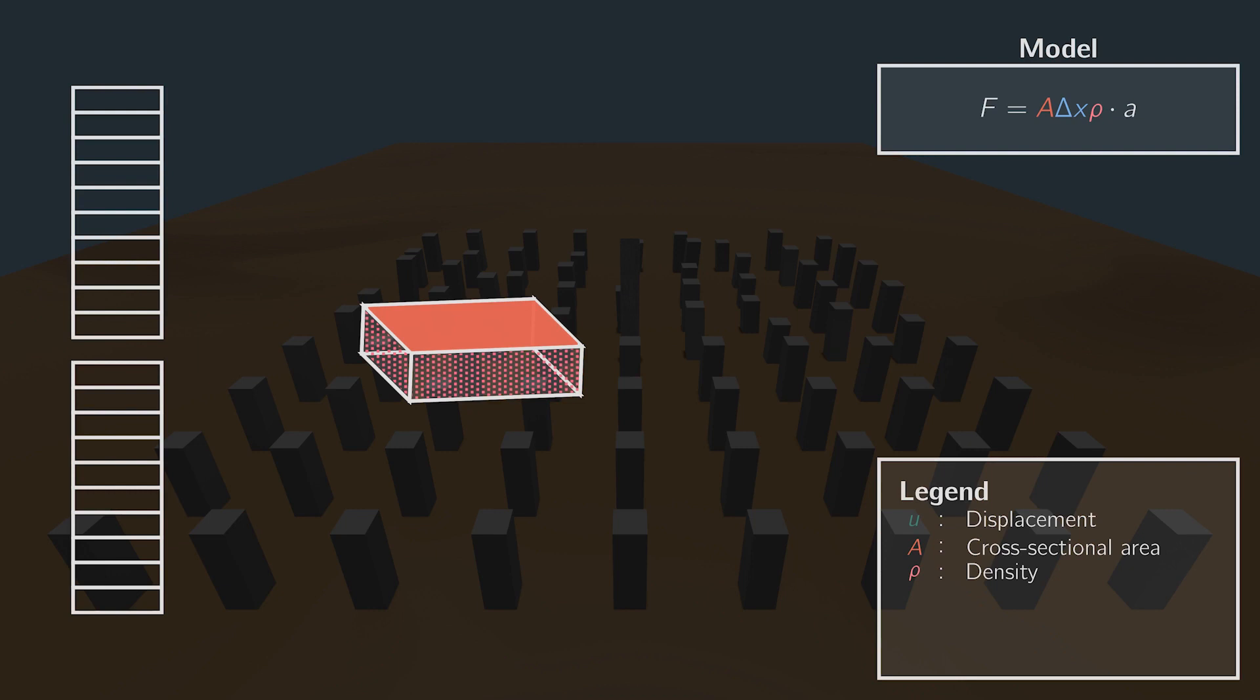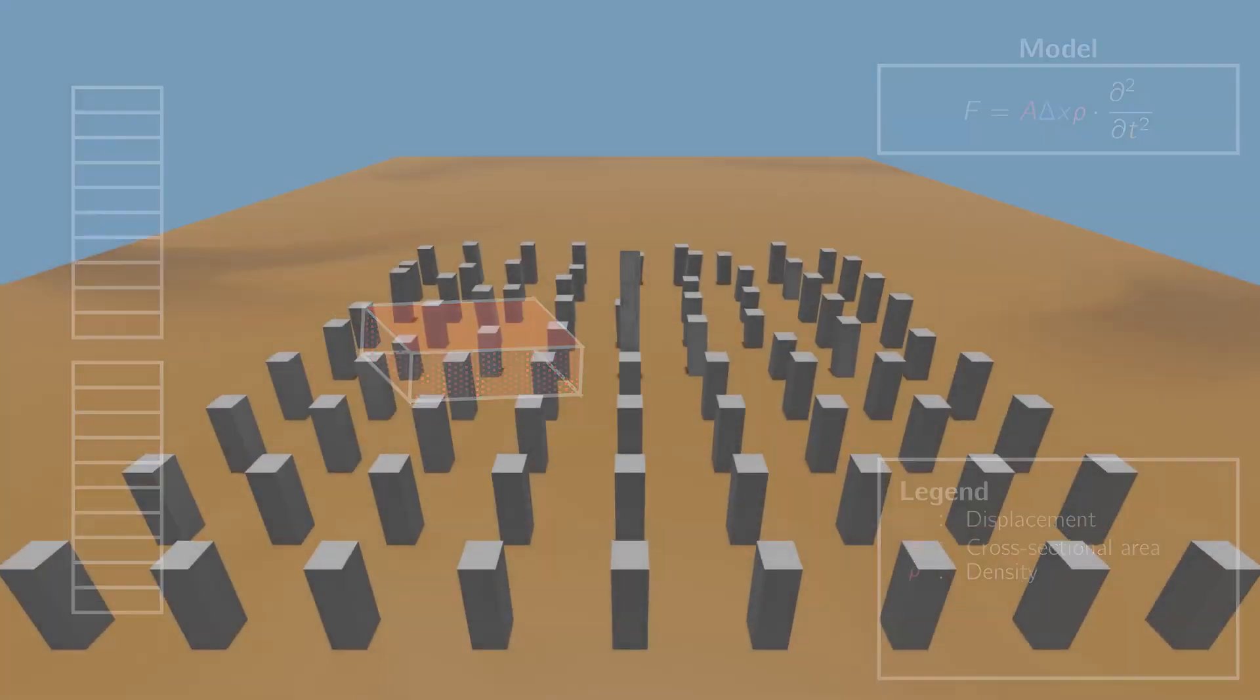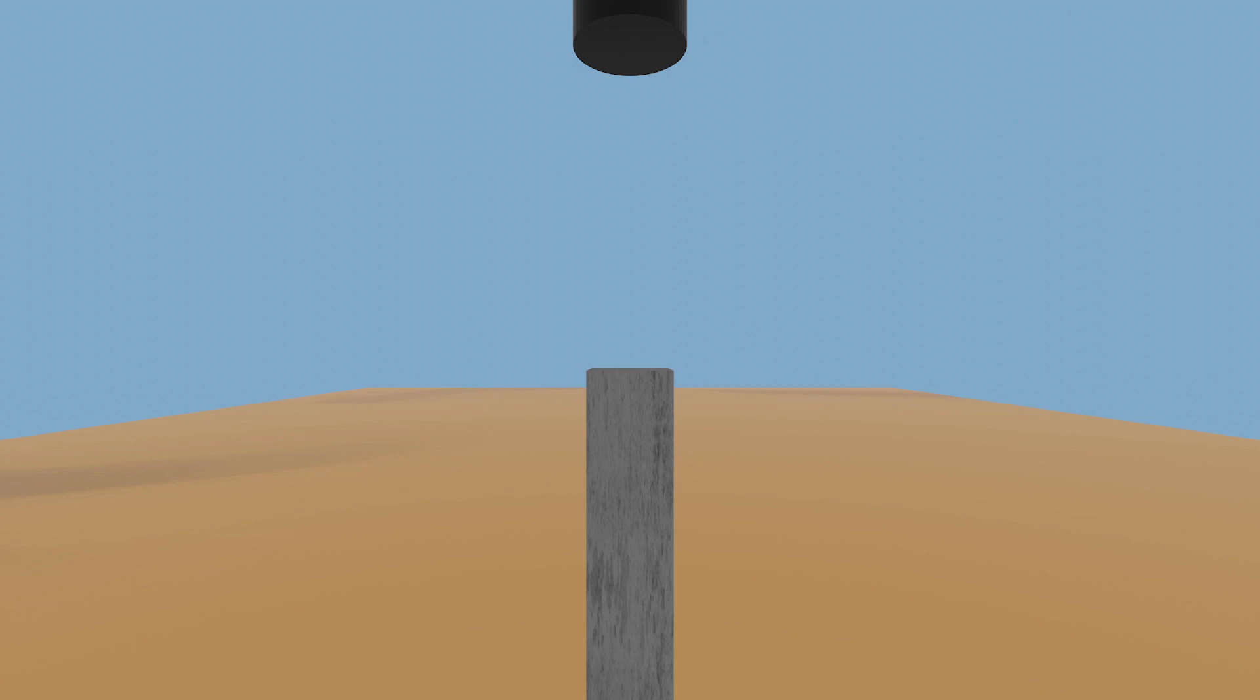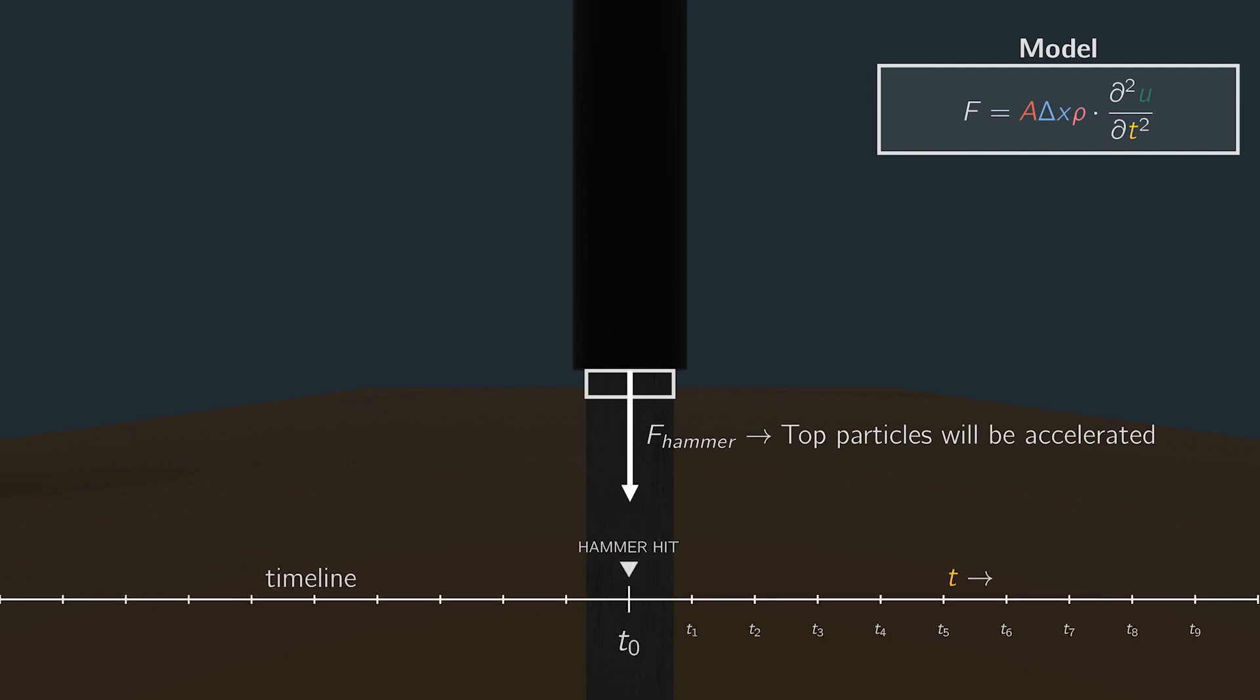To calculate the acceleration of the slice, we take the second partial derivative with respect to time of the displacement U. Before the hammer hits the pile, we assume no forces act upon the pile, and the acceleration is equal to zero. Let's move forward to the point in time where the hammer hits the pile. The pile is put into motion by the hammer force on top. Both intuitively, and by having a quick look at the equation, we know that the impact of the hammer will accelerate the top particles of the pile. This exact moment in time is referred to as T0. I want to emphasize that at this moment in time, T0, only the top slice experiences the hammer force and starts to move.